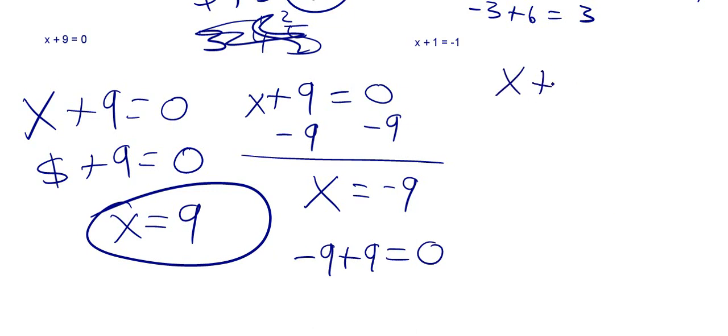Last problem. You've got x plus 1 is equal to negative 1. Remember, negative numbers are okay. Don't be afraid of them. Sometimes when people see this negative number, they freak out. You know, hey, don't freak out. It's all right.